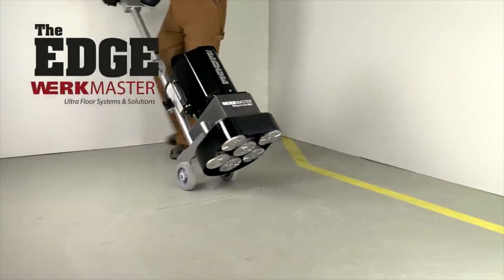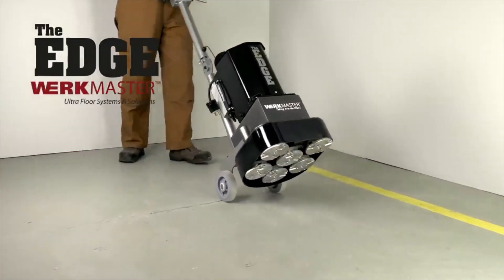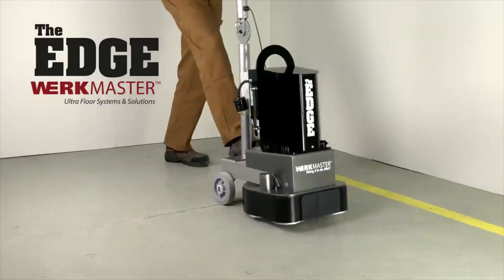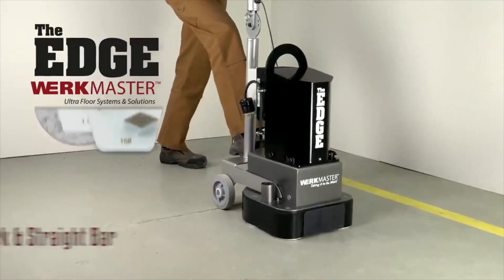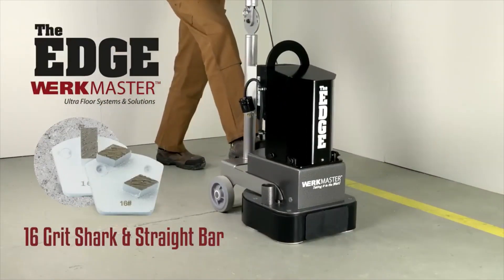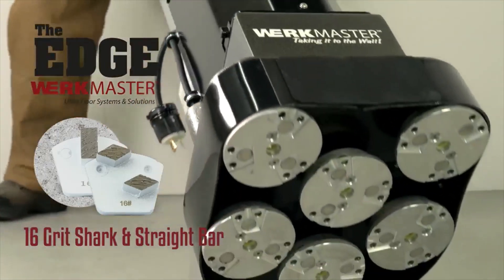In this video we will show you how to grind and polish concrete using the Edge by Workmaster. First, we will need to remove the paint from this concrete floor. We will use our 16 grit shark and straight bar combo tooling to remove the paint from the floor.